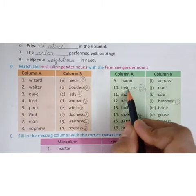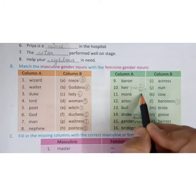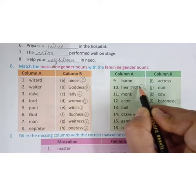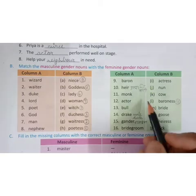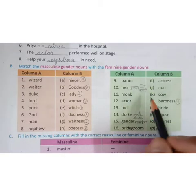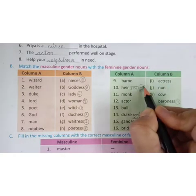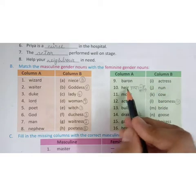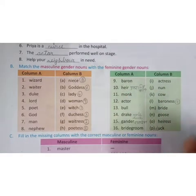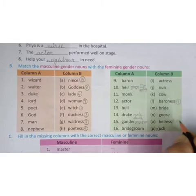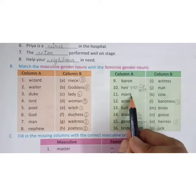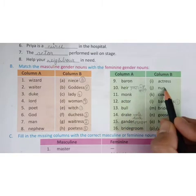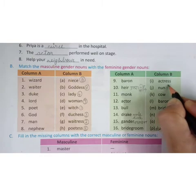Heir, H-E-I-R, means uttara adhikari - the successor. Like raja ka uttara adhikari, the prince who will become king after the raja. Heir's feminine is heiress. This is the tenth answer. Monk means sadhu. Monk's feminine gender is nun, the eleventh answer.